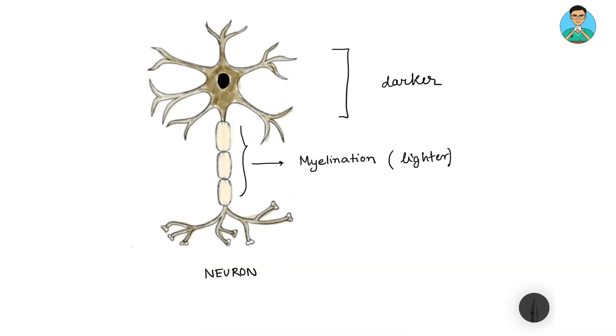The neuron basically has two parts: the cell body and the axon. The cell body also comes with certain processes known as dendrites.